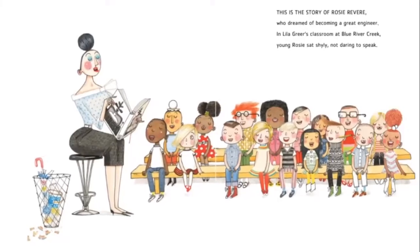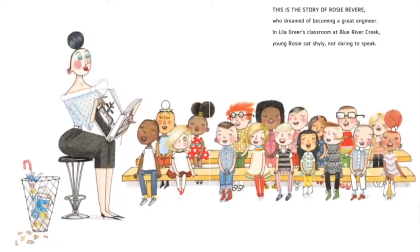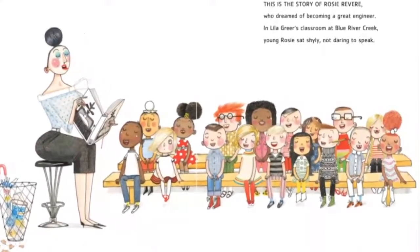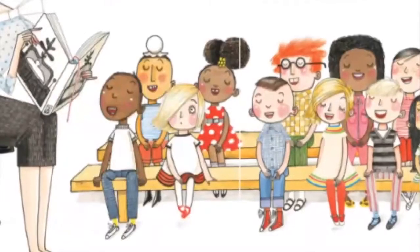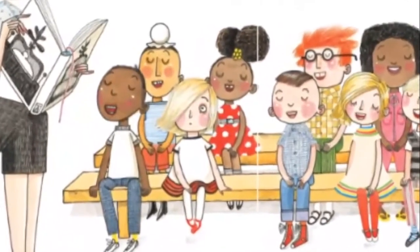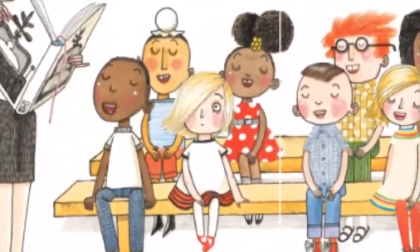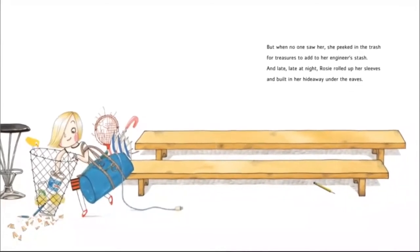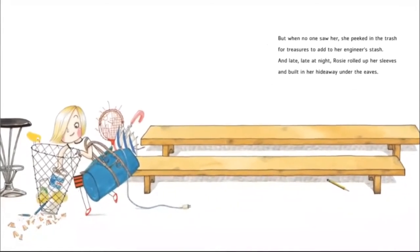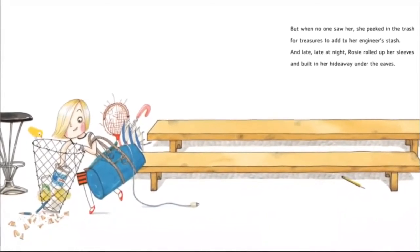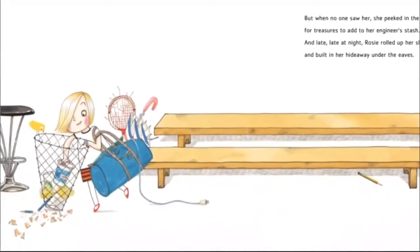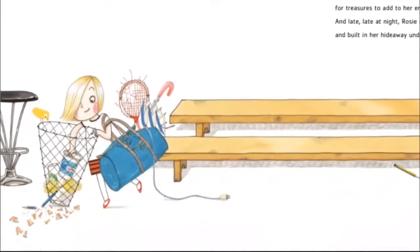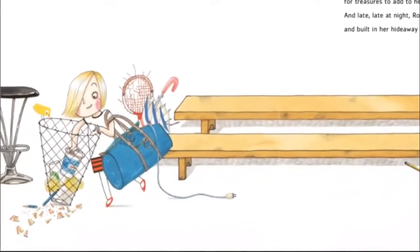This is the story of Rosie Revere, who dreamed of becoming a great engineer. In Lilla Greer's class at Blue River Creek, young Rosie sat shyly, not daring to speak. But when no one saw her, she peeked in the trash for treasures to add to her engineer's stash.